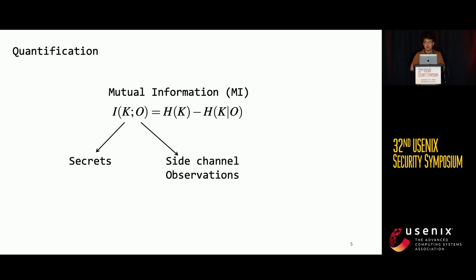Given a secret key, suppose it leads to a side-channel observation O. The information of a key leaked in O can be quantified using their mutual information. Here, H denotes entropy, which reflects uncertainty. The mutual information quantifies how much uncertainty is reduced given side-channel observations.